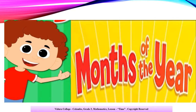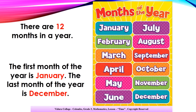Months of the Year. There are 12 months in a year. They are January, February, March, April, May, June, July, August, September, October, November, and December. The first month of the year is January. The last month of the year is December.